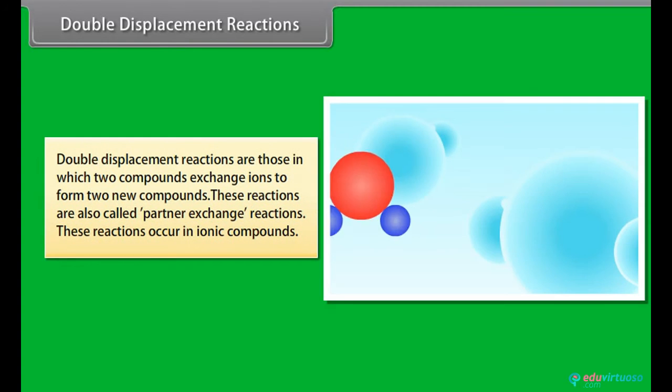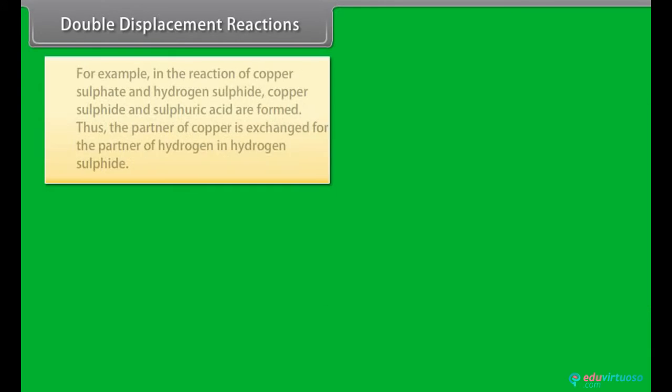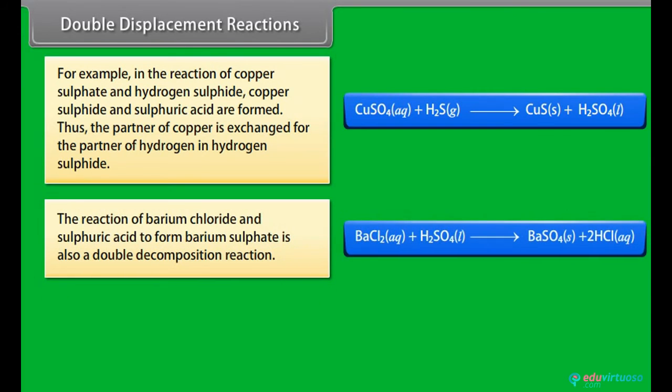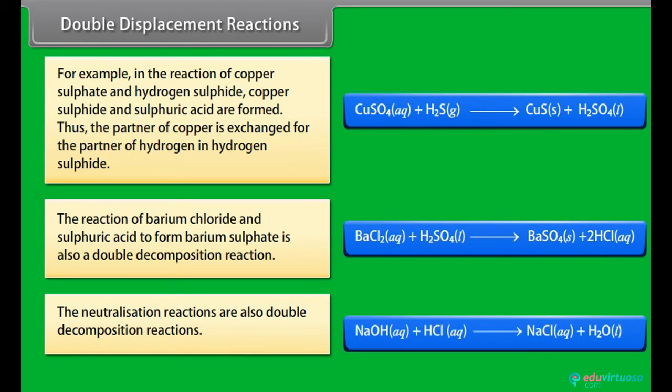Double displacement reactions: Double displacement reactions are those in which two compounds exchange ions to form two new compounds. These reactions are also called partner exchange reactions. These reactions occur in ionic compounds. For example, in the reaction of copper sulphate and hydrogen sulphate, copper sulphate and sulphuric acid are formed. Thus, the partner of copper is exchanged for the partner of hydrogen in hydrogen sulphate. The reaction of barium chloride and sulphuric acid to form barium sulphate is also a double decomposition reaction. The neutralization reactions are also double decomposition reactions.